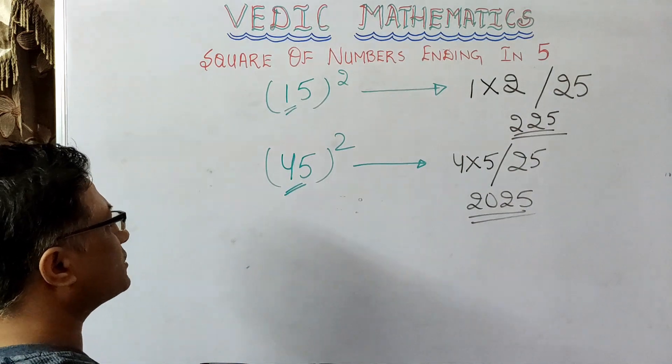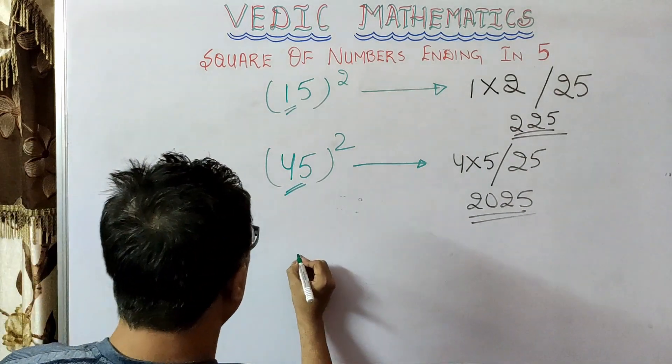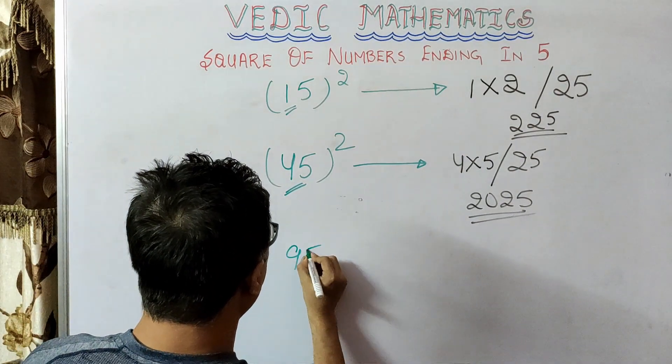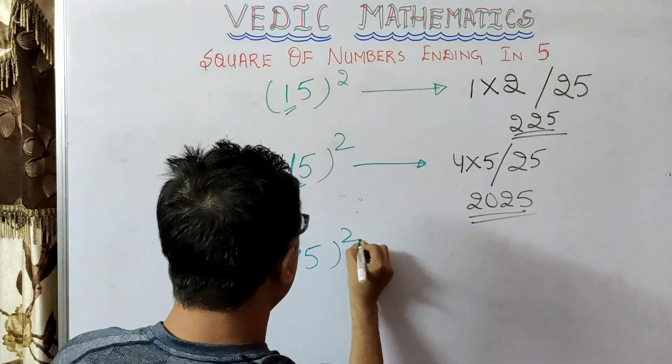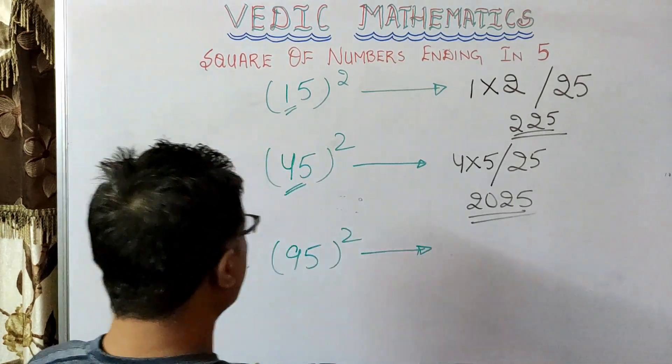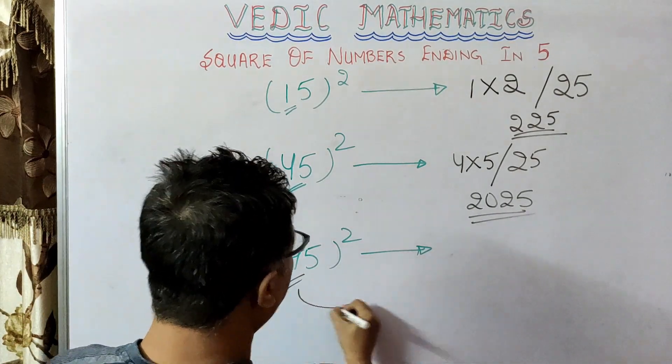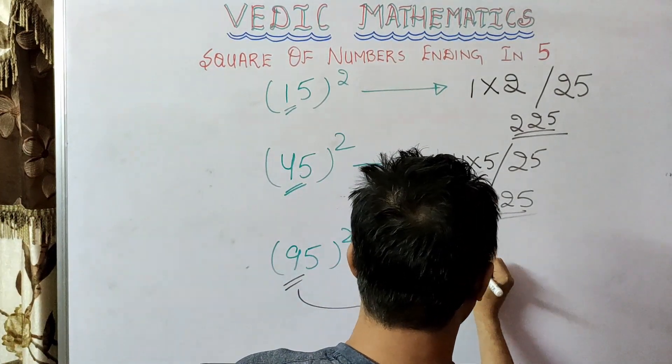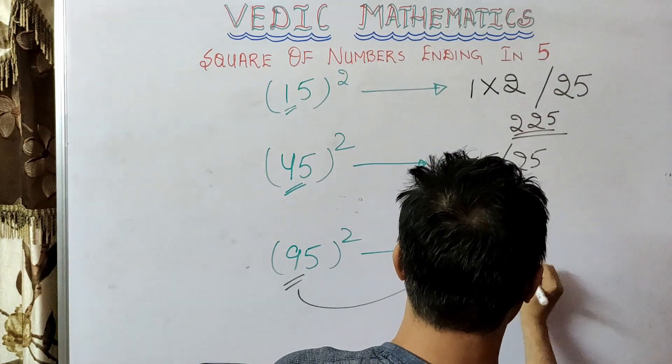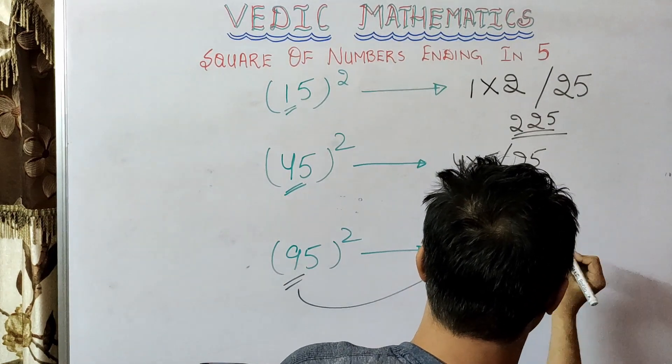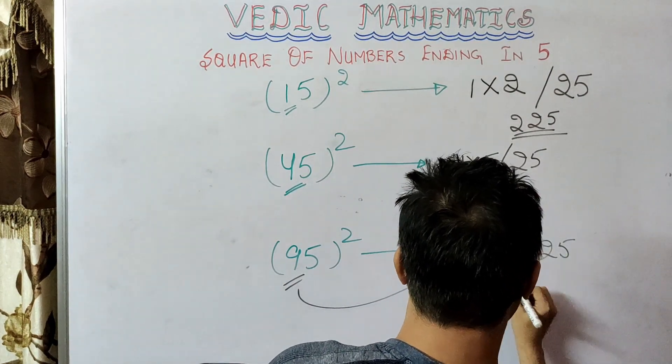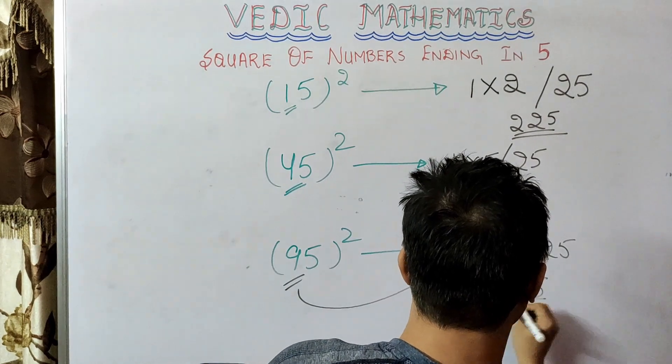suppose you have to calculate 95 square. What will you do? Again, you have 9 here, then you get 9 multiplied by 10, and then 25. 9025, this is your